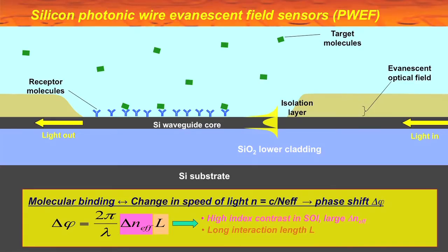The sensor that we use is called evanescent field sensor. Basically the molecule binds to the surface and there is an evanescent field of the light on the surface, and it's that interaction that gives rise to the sensing signal.